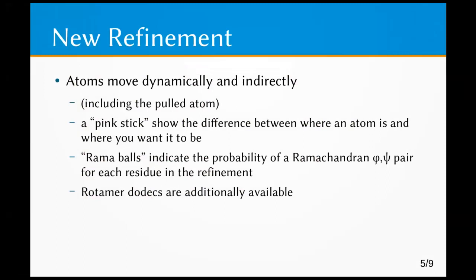The new refinement is perhaps the major difference in Coot 0.9. Atoms move dynamically and indirectly. Previously, when one pulled on an atom, the atoms around it moved as if they were attached to a rubber sheet. Now, as you pull on an atom, it and all of the atoms in its environment are dynamically refined. So it behaves differently and, in my opinion, far more usefully.